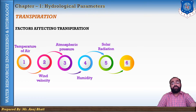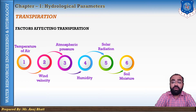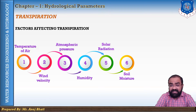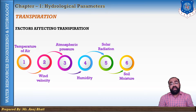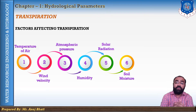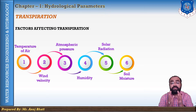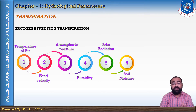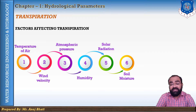The sixth factor is soil moisture. Transpiration depends upon the soil moisture content. The water content of the soil after gravitational water has drained out is called field capacity. The water in the soil between the field capacity and wilting coefficient is available for transpiration. If the available water is less than the wilting point, the plants may not be able to absorb water from the soil mass, meaning the rate of transpiration decreases as the soil water content decreases.